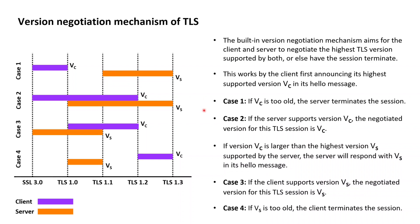The second case is the case where the highest version supported by the client is supported by the server, but with the server actually also supporting newer versions. In that case, the server will simply accept the version offered by the client by replying with a server hello message containing the TLS version sent by the client. The TLS session then unfolds on the agreed-on version.